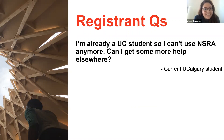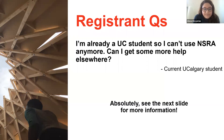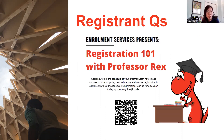The next question: this person is already a U of C student and can't use their NSRA anymore — can they get help elsewhere? NSRA is the New Student Registration Assistance, made just for incoming new students. For current students, Enrollment Services has put together Registration 101 workshops. The QR code will take you to the calendar where you can book those sessions and see when they're offered. It's a good review for everyone — if you need a refresher, definitely check them out.